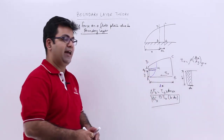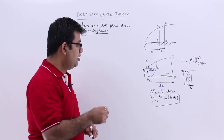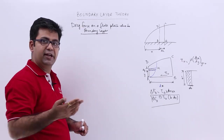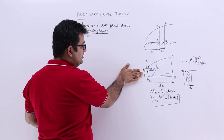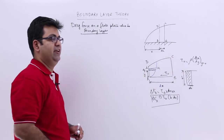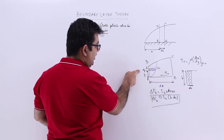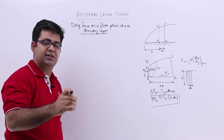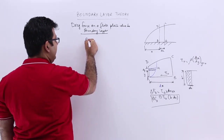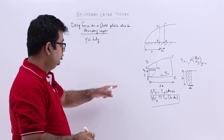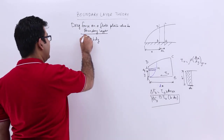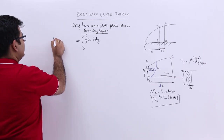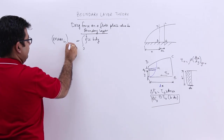This drag force δFd over the small element dx should be equal to the rate of change of momentum over x. To find that, let us first find the mass flow rate in through face AD. We take a small strip at distance y with height dy, so the mass flowing through this strip is ρ·u·b·dy. Integrating from 0 to δ gives the mass flow rate in through face AD.